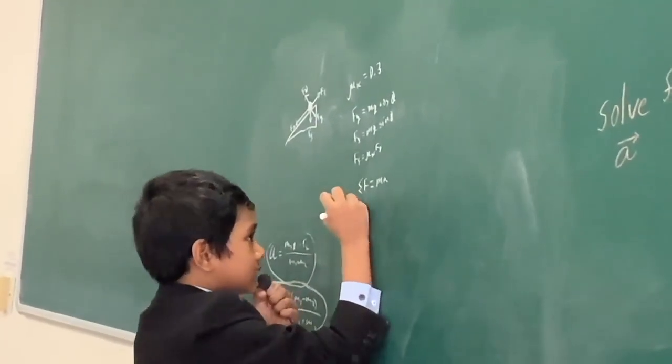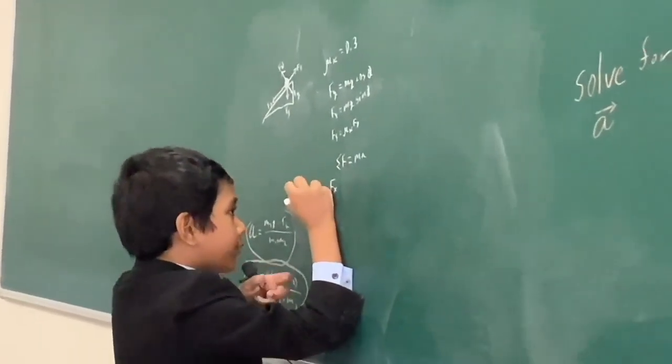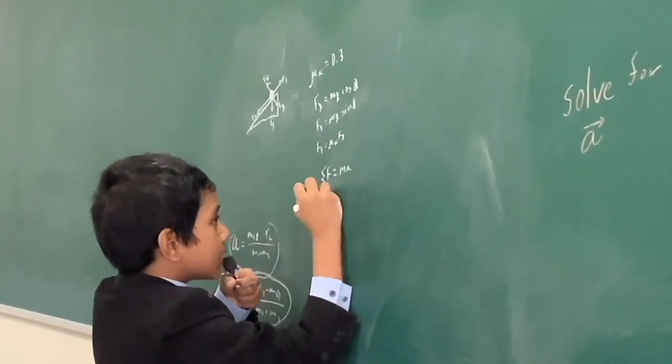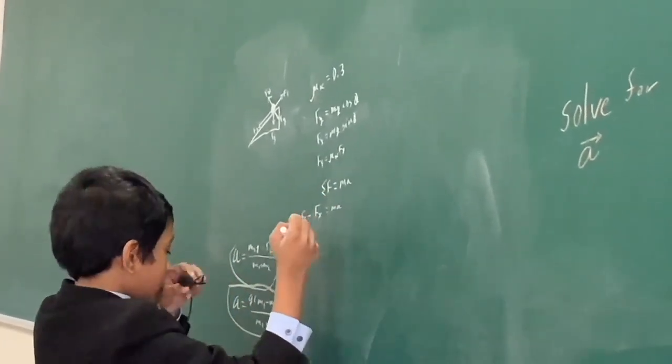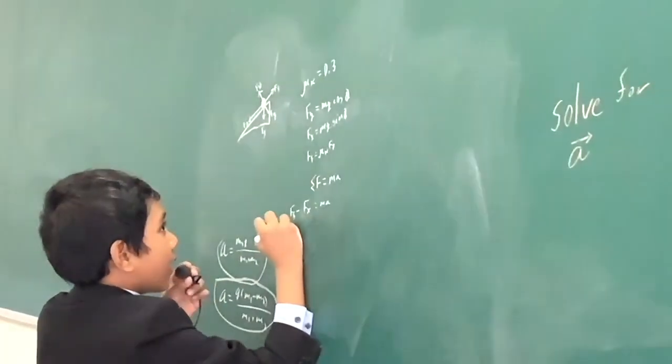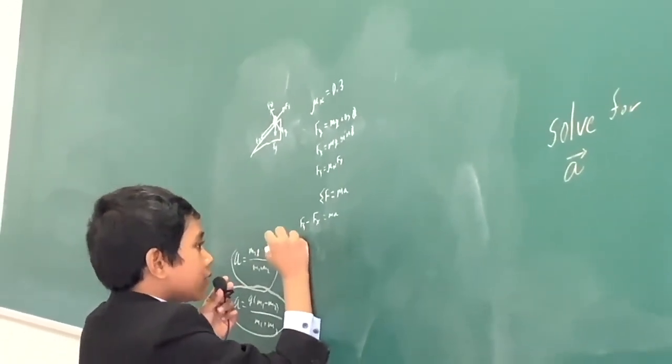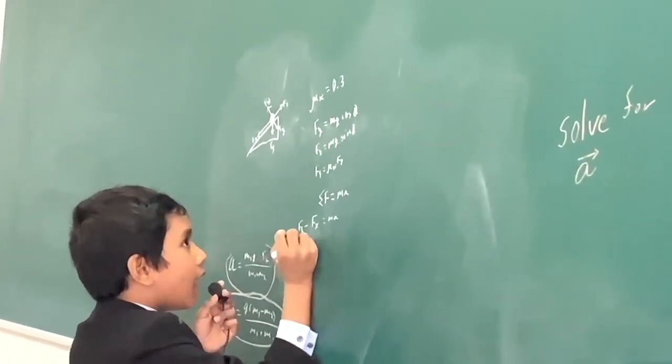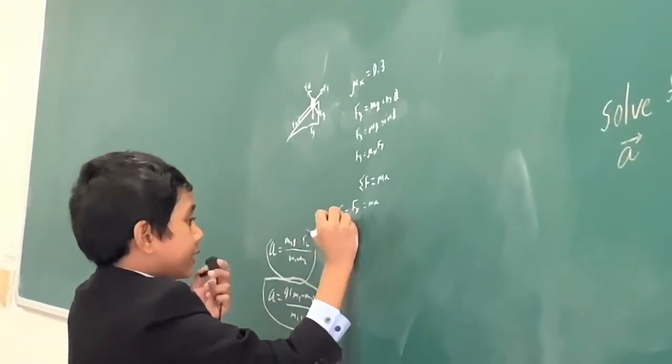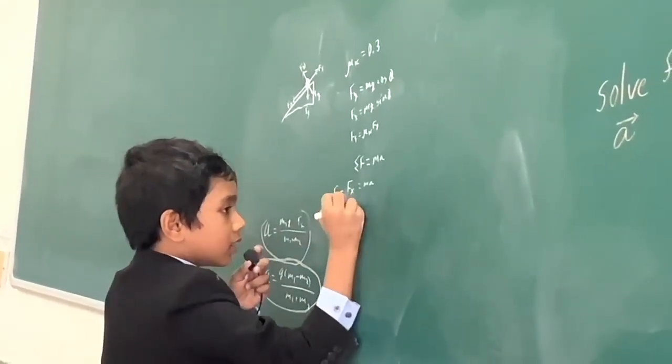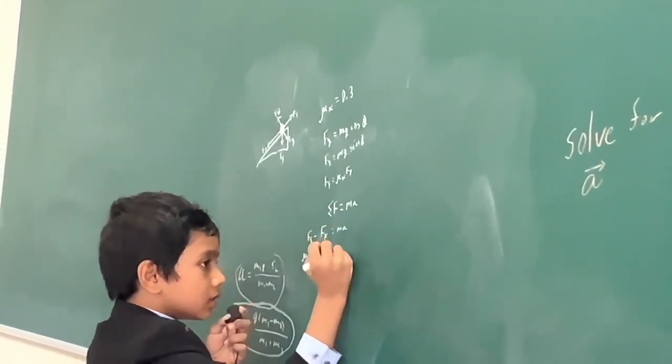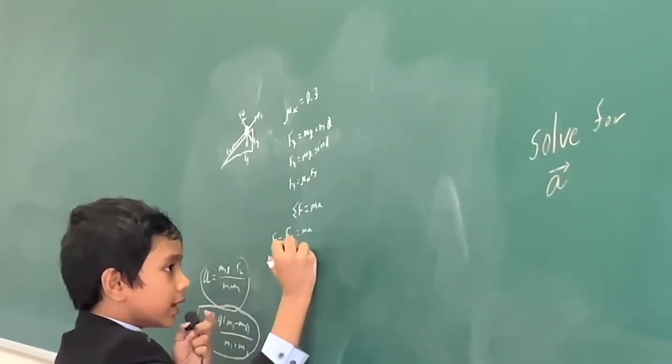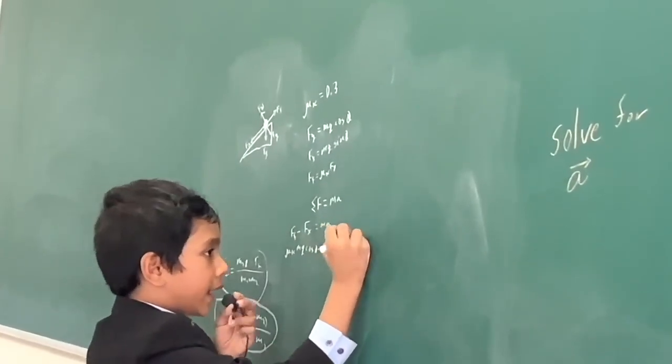And so now what are the net forces? Well, we have f of f and we also have fd parallel. And so now that's all equal to ma. Now let's plug in. We know fd parallel, or ff rather, is mu k fn. So let's get that over here: mu k fn, and then we subtract by mg sine theta. That's all equal to ma.